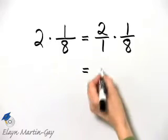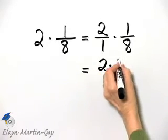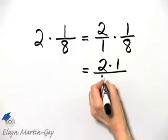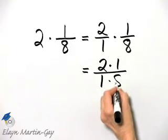And then how do we multiply fractions? It's numerator times numerator over denominator times denominator.